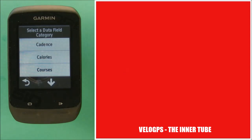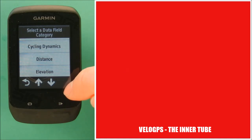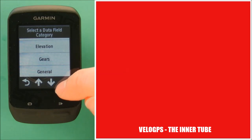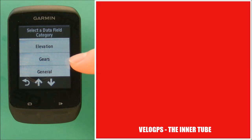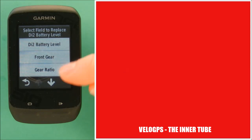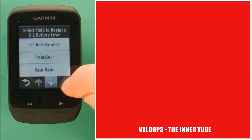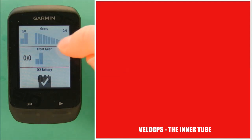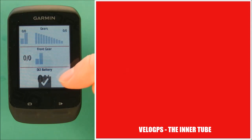This is new on the 510 and the 810 — it was previously a feature only on the Garmin Edge 1000, but if you've upgraded to software version 3.50 you'll now find a gears category listed in the data field categories. Selecting it gives you a whole range of options including DI2 battery level, front gear, gear ratio, and gears — which tells you your front and rear gears. DI2 battery level is quite useful to make sure you never get caught short running out of battery and getting stuck in gear.